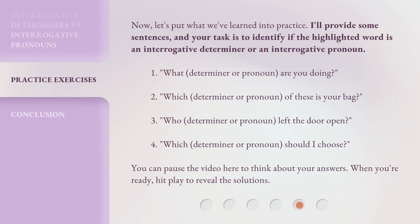Now, let's put what we've learned into practice. I'll provide some sentences, and your task is to identify if the highlighted word is an interrogative determiner or an interrogative pronoun. 1. 'What' — determiner or pronoun — 'are you doing?' 2. 'Which' — determiner or pronoun — 'of these is your bag?' 3. 'Who' — determiner or pronoun — 'left the door open?' 4. 'Which' — determiner or pronoun — 'should I choose?' You can pause the video here to think about your answers. When you're ready, hit play to reveal the solutions.